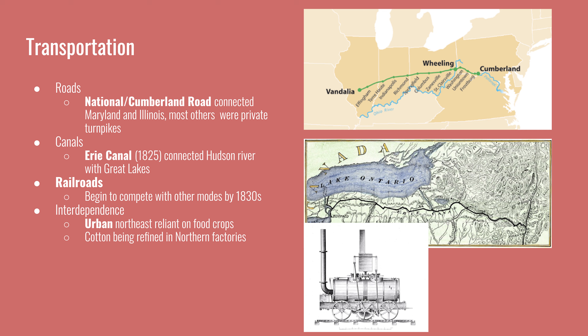Railroads became competitive with other modes of transportation by the 1830s. Early steamboats and railroads were rather dangerous — if too much pressure built up inside a steam engine, it could explode and kill those on board. However, by the 1830s, the steam engine was perfected and standardized, making it safer. The interdependence created between the urban Northeast and the rural South stemmed from differing economic activity: the North relied on the Midwest for food crops, and cotton grown on southern plantations was shipped north to be refined in northern factories into cloth and textiles.